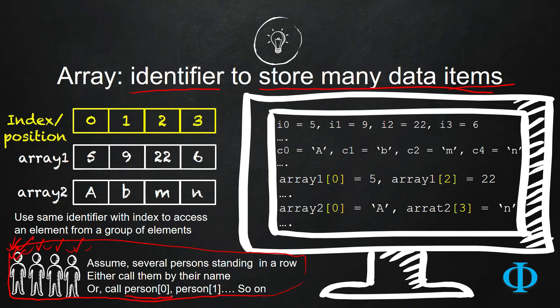Then the next person you can identify as person 1, the next one is person 2 or person 3, something like this. So this is exactly the concept of array in the context of programming.